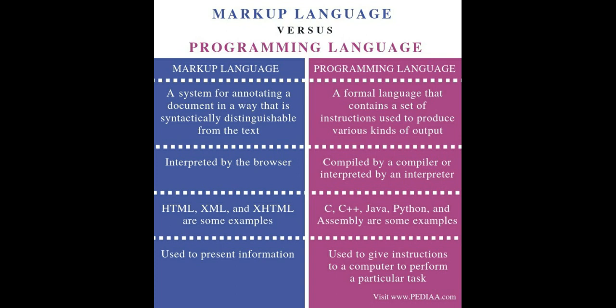Take a look at this comparison from fidjaa.com. Markup language: a system for annotating a document in a way that is syntactically distinguishable from the text; interpreted by the browser; examples are HTML, XML, and XHTML; used to present information. Programming language: a formal language that contains a set of instructions used to produce various kinds of output; compiled by a compiler or interpreted by an interpreter; examples include C, C++, Java, Python, and others. These languages are also categorized by low and high level programming languages. It is used to give instructions to a computer to perform a particular task.